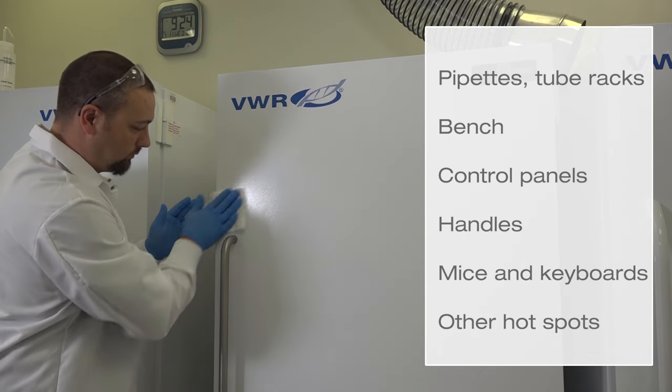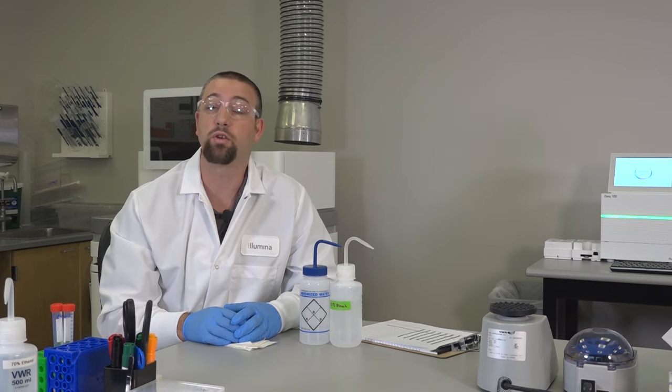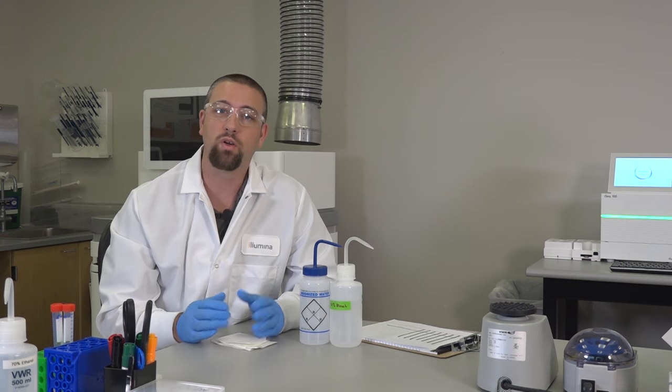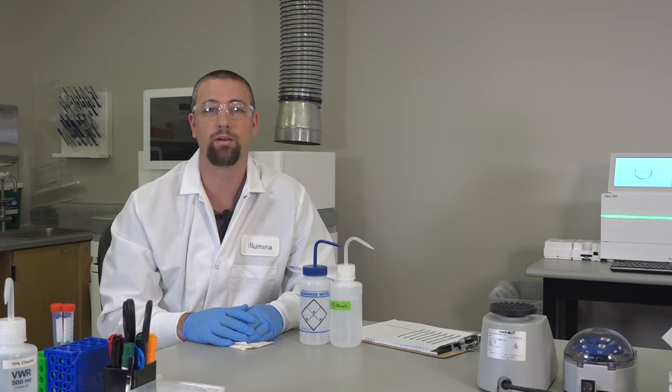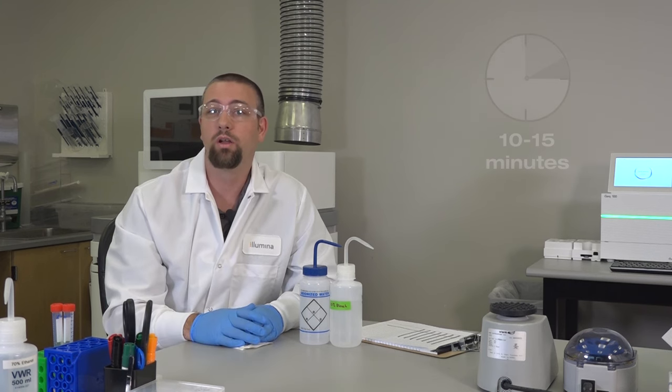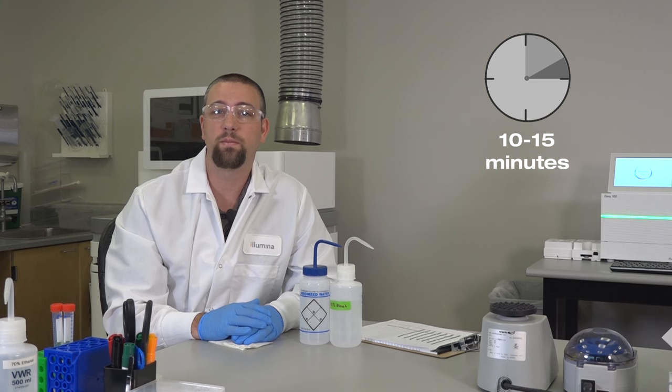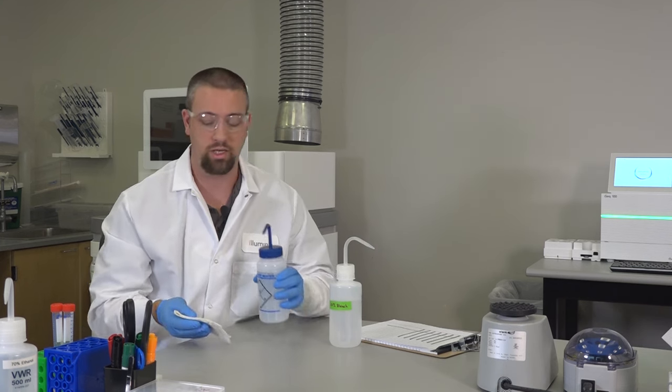Solutions with low concentrations of bleach can lose potency quickly and variably based on your specific lab environment. For best results, make fresh bleach solution daily from a higher concentrated stock. Also, if the surface is bleach resistant, wipe it down and then allow 10 to 15 minutes before using a paper towel dampened with water or 70% ethanol to remove the residual bleach.